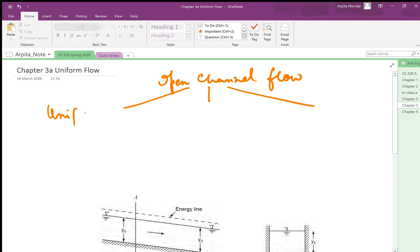The first one is the uniform flow where the channel cross section as well as the flow properties do not change from one section to another as you move along the channel. The second type of flow is called gradually varied flow GVF, and the third type of flow is called rapidly varying flow.